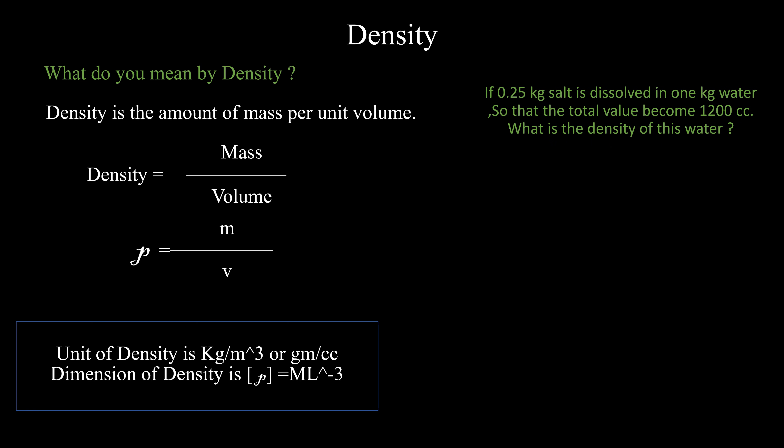The unit of density is kilogram per meter cube or gram per cc. Dimension of density is ML inverse minus 3. If 0.25 kg salt is dissolved in 1 kg water so that the total value becomes 1200 cc, what is the density of this water? We know 1 cc equals to 10 inverse minus 6 meter cube, so rho equals to 1.04 kg per meter cube.